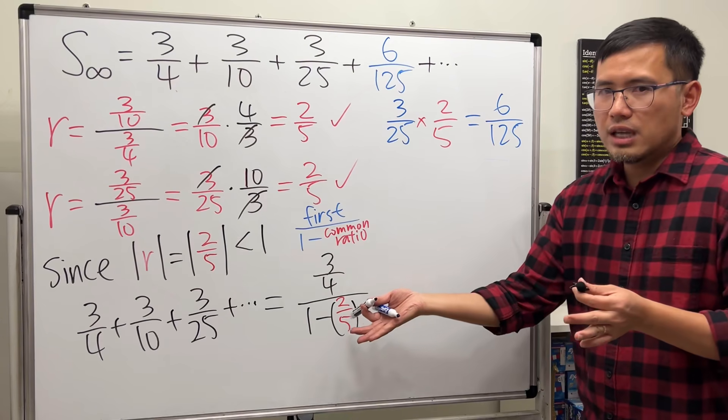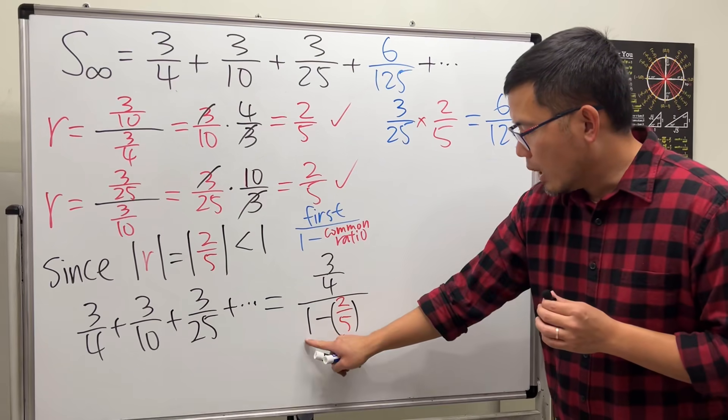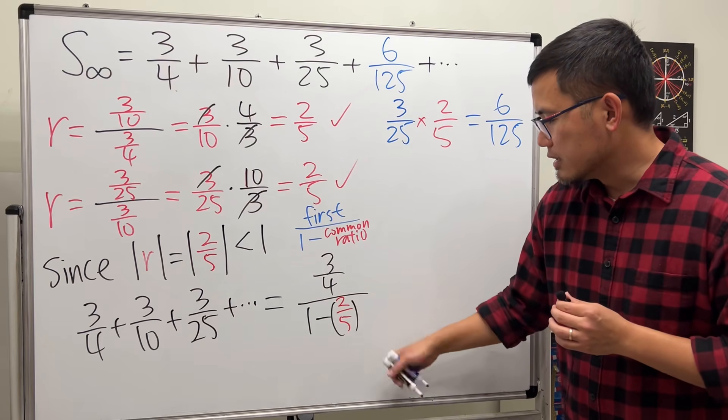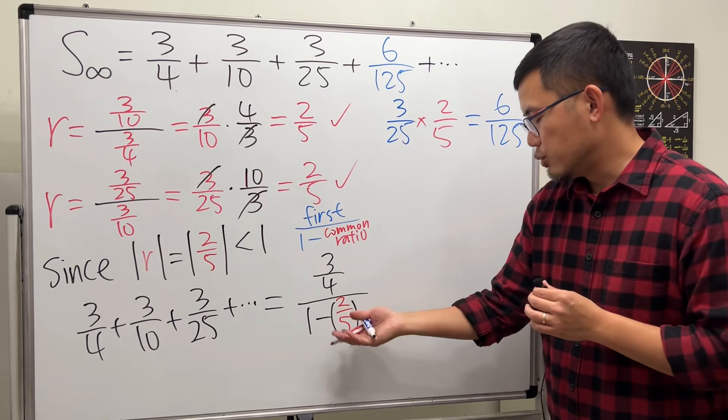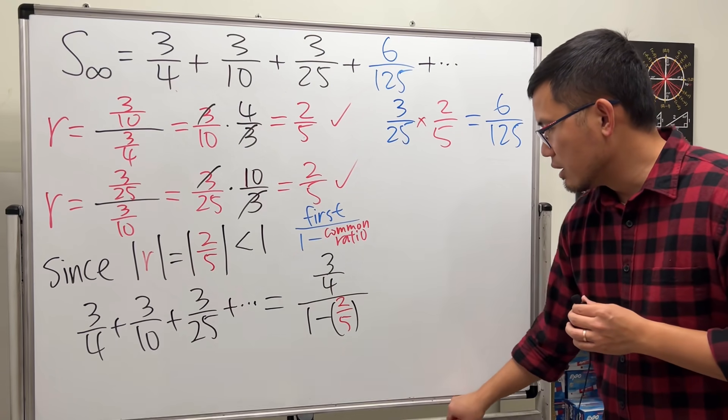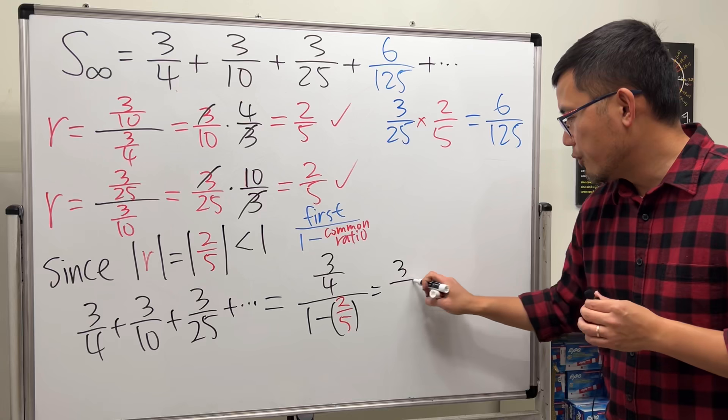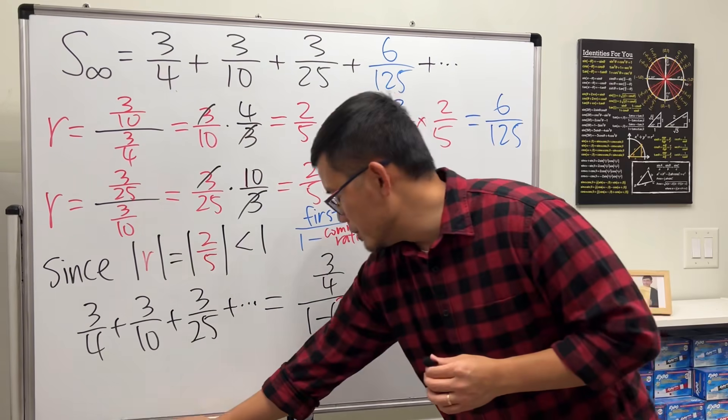And now we just have to work this out and we can be happy. 1 minus 2 over 5 is the same as 5 over 5 minus that, which is 3 over 5. So this right here is 3 over 4. Let me do this for you guys.